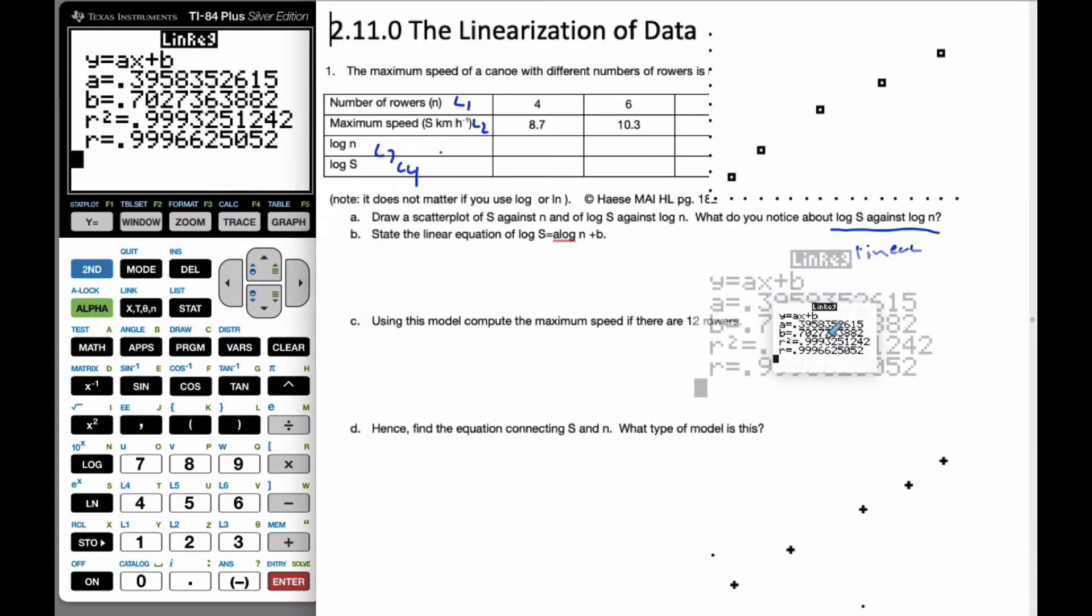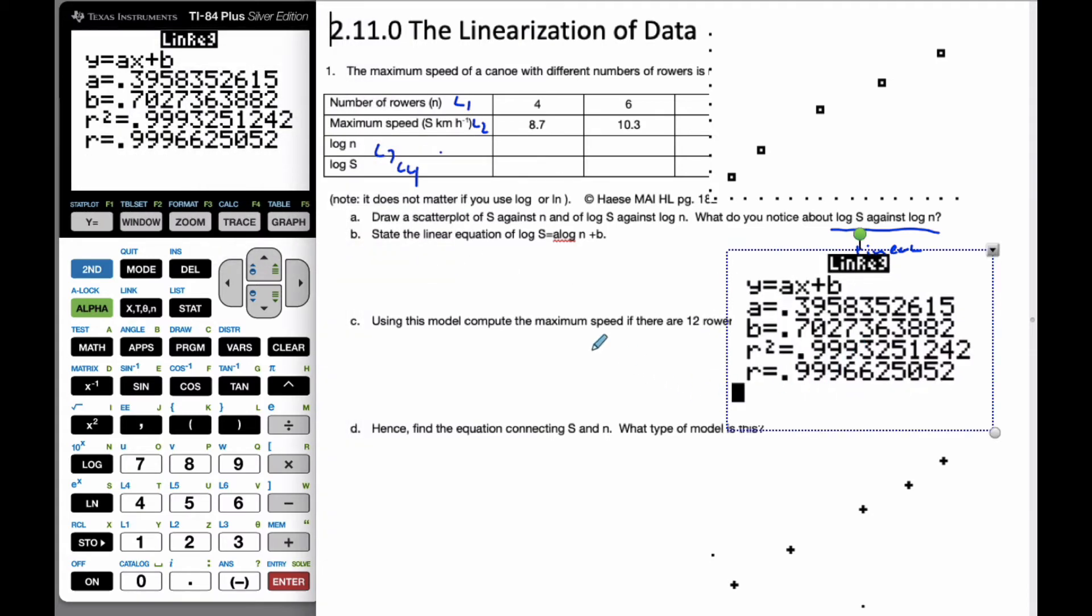Note my R squared value is really high. I'm going to pull this over here so we can refer to it if needed. And so, state the linear equation. Well, I know that log S is equal to 0.396 log N plus 0.703. And so, this is the linear relationship between the two logs.